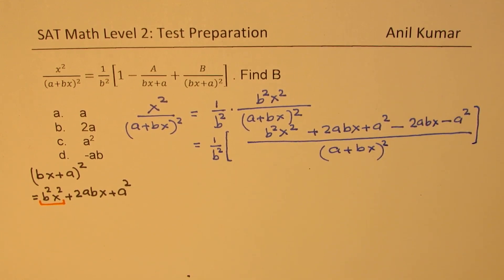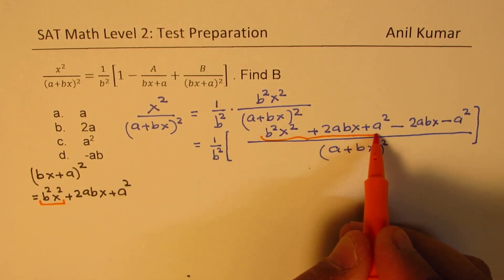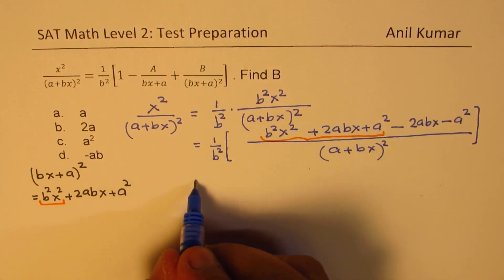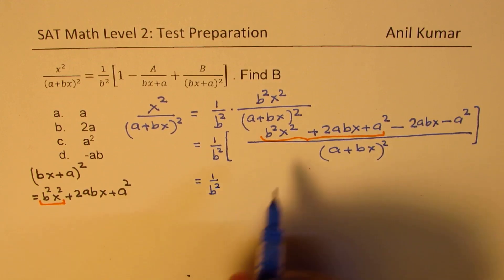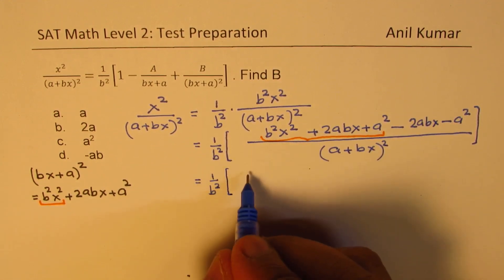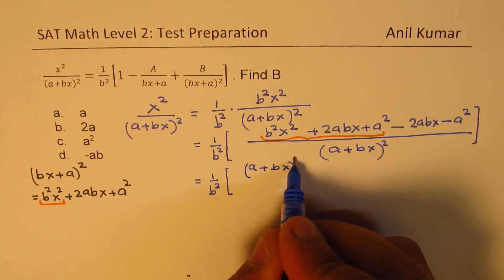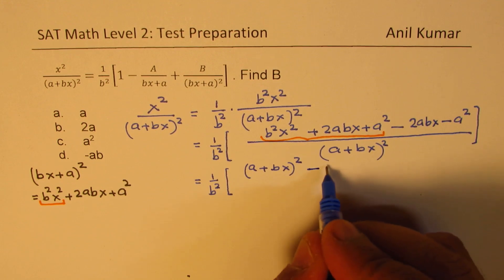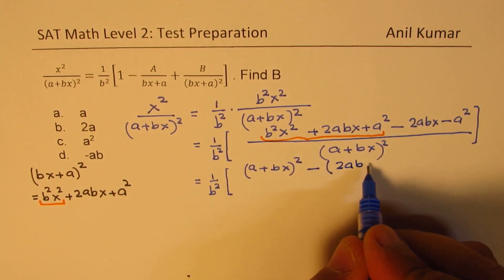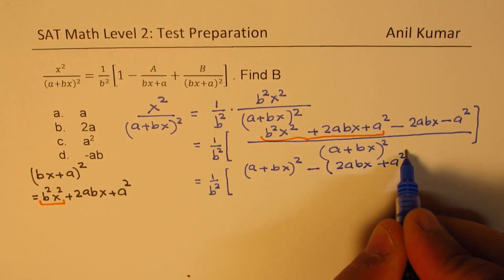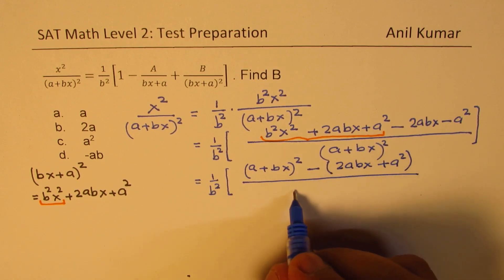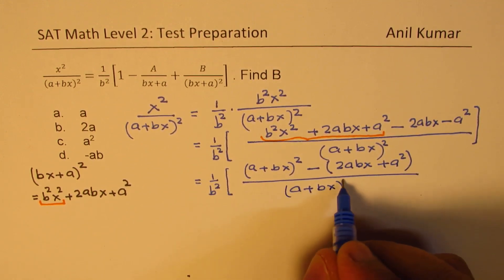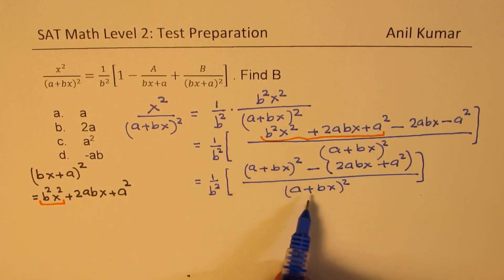This is a key step. The first three terms form a perfect square — we can write this as (a plus bx) whole squared. We are left with minus 2abx minus a squared. Taking minus common gives us minus (2abx plus a squared), all divided by (a plus bx) whole squared. Then (a plus bx) whole squared divided by (a plus bx) whole squared gives the first term, which is 1.